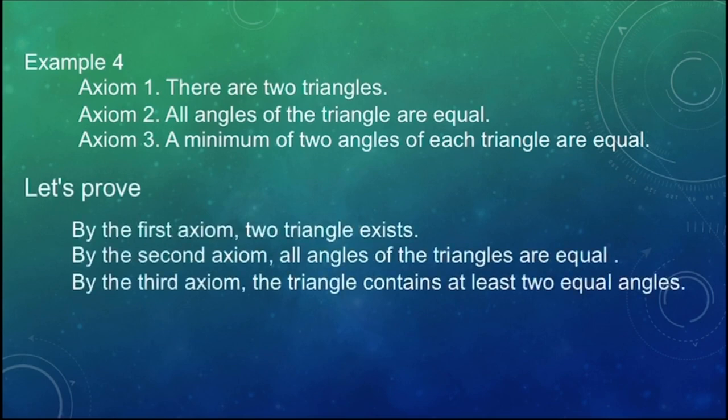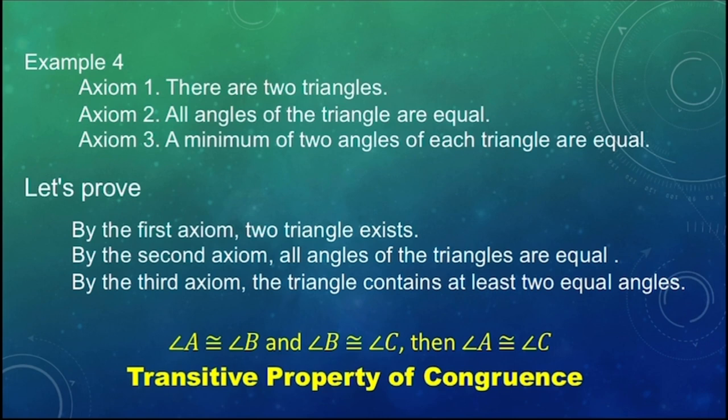By the first axiom, 2 triangles exist. By the second axiom, all angles of the triangles are equal. By the third axiom, the triangle contains at least 2 equal angles. Therefore, if angle A is congruent to angle B and angle B is congruent to angle C, then angle A is congruent to angle C. Thus, the transitive property of congruence exists. So now, I hope you understand our lesson for today, which is illustrating axiomatic systems.